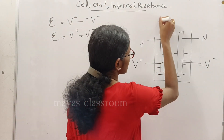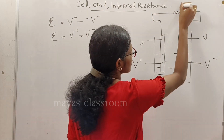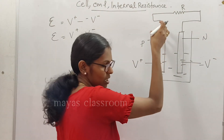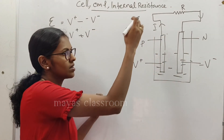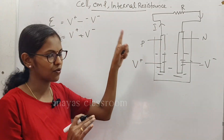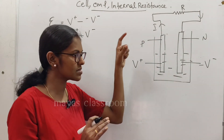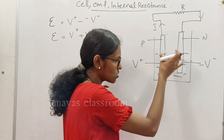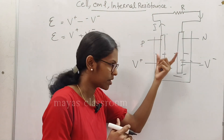Now we have a resistor connected to the two electrodes. This is an external resistance R. Current begins to flow, and we observe a steady current flow through the circuit.